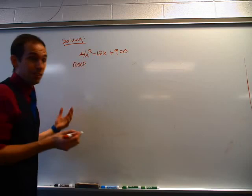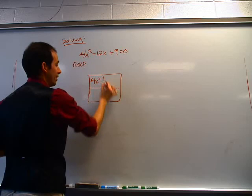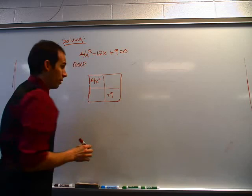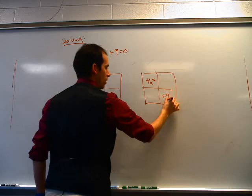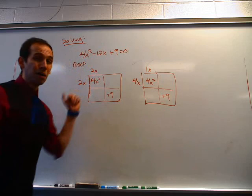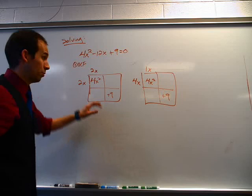So I draw my box. I got 4x squared in here and positive 9 in here. Two numbers that multiply to give me 4x squared — well there are actually two options: 2 times 2 gives me 4, and x times x gives me x squared. But also 4 times 1 is 4, and x times x is x squared. So I've got two options — which do you choose? Unfortunately, a little bit of guesswork. So we're going to guess the first one and see where it takes us. We're going to draw out our factors for positive 9 —